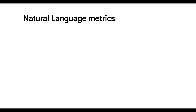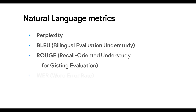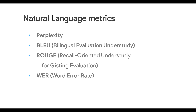Next, it's worth mentioning that Metrax has a number of standard natural language processing metrics, such as perplexity, BLEU score, and ROUGE. The library also includes word error rate, which is really useful for speech recognition or text generation, by measuring the edit distance between text.